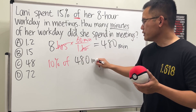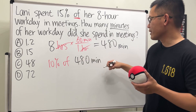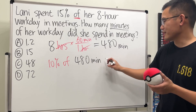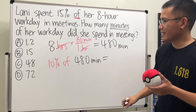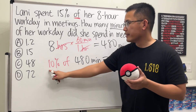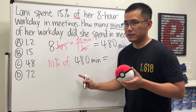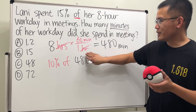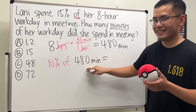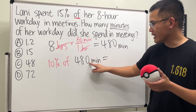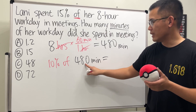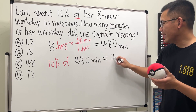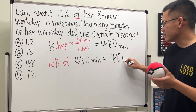You don't have to show all this work on the SAT, but I'm putting it down for you. For 10% of 480, you can just move the decimal point to the left one time — it's like dividing by 10. So 10% of 480 is just 48 minutes.